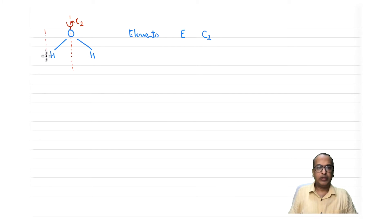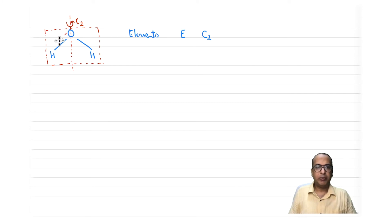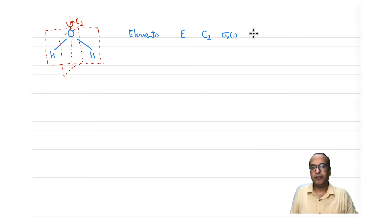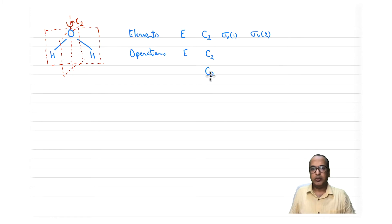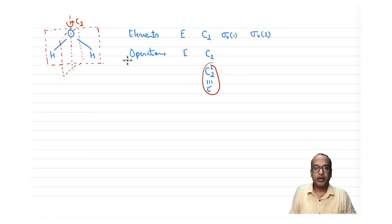There is one plane which is the molecular plane containing C2, and another plane perpendicular to the plane of the board reflecting the two hydrogens. So there are two independent planes, sigma-v1 and sigma-v2. For operations: E generates one operation; C2 generates two operations, C2 and C2-squared, but C2-squared equals E, so we count only non-redundant operations.